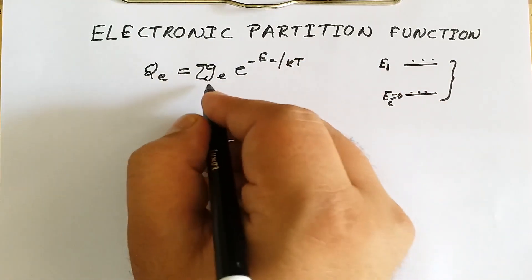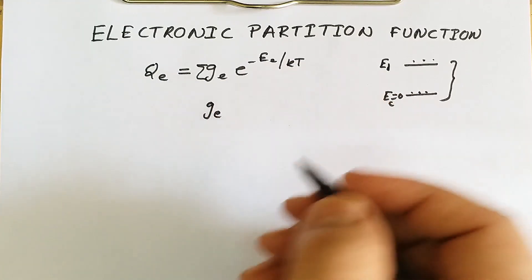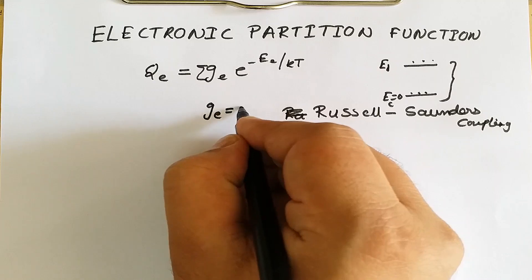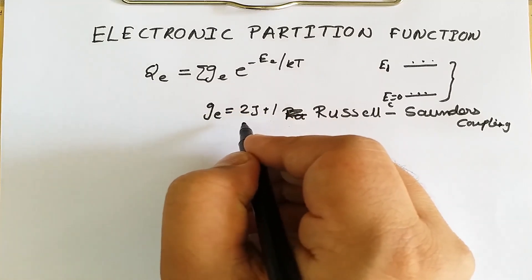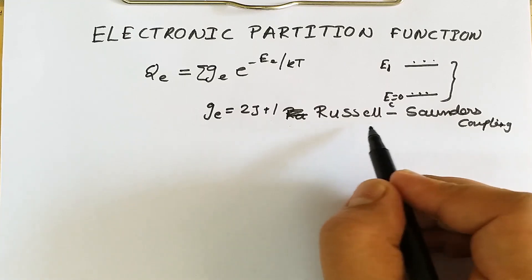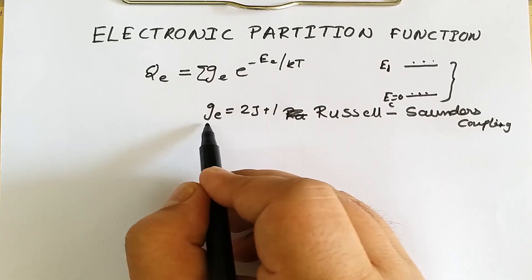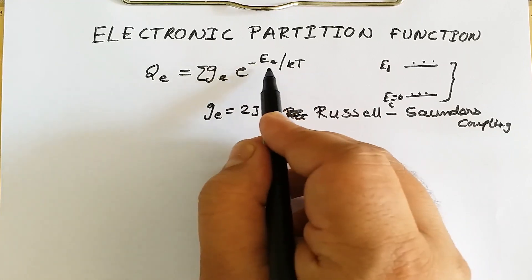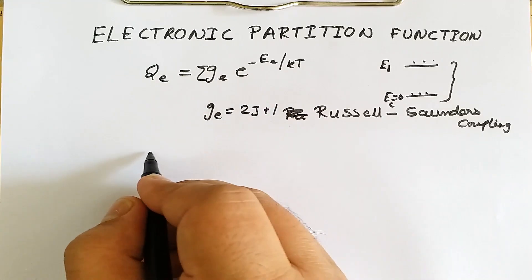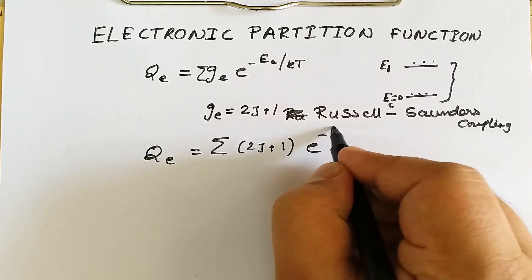The statistical weight factor ge for ground state electrons is given by the Russell-Saunders coupling scheme. The degeneracy for ground state electrons is given by 2J+1, where J is the angular momentum quantum number. This degeneracy is obtained from Russell-Saunders coupling. When we combine both the degeneracy and the energy, our electronic partition function qe becomes: qe = summation of (2J+1) times e raised to minus ee upon kT.